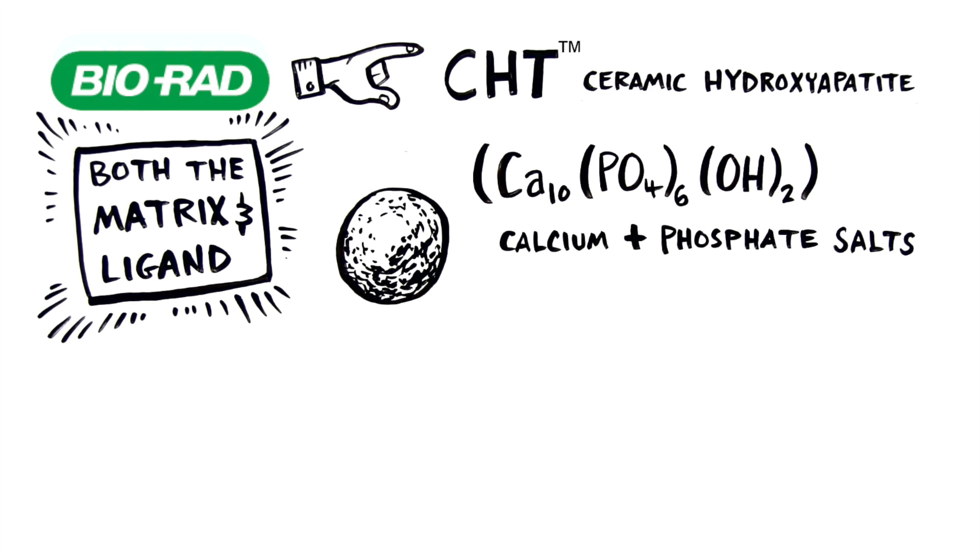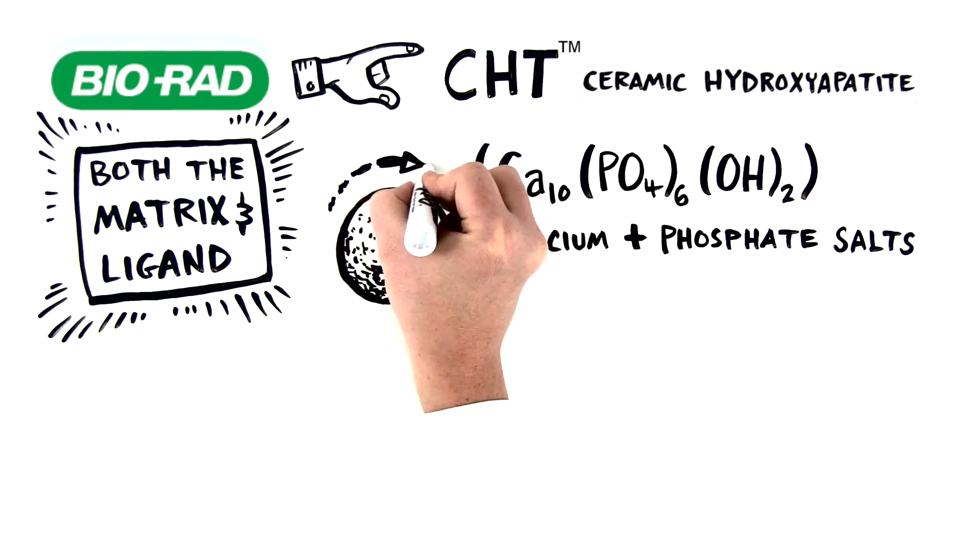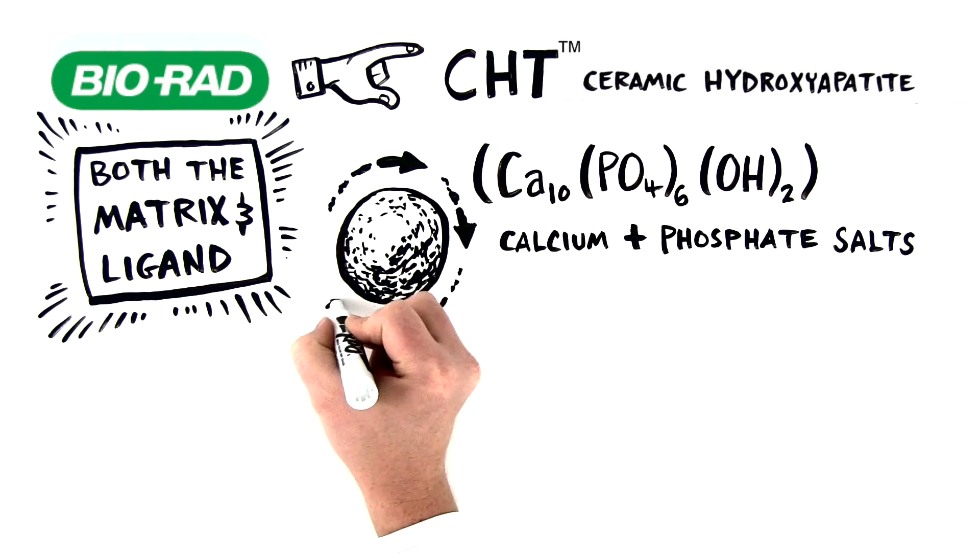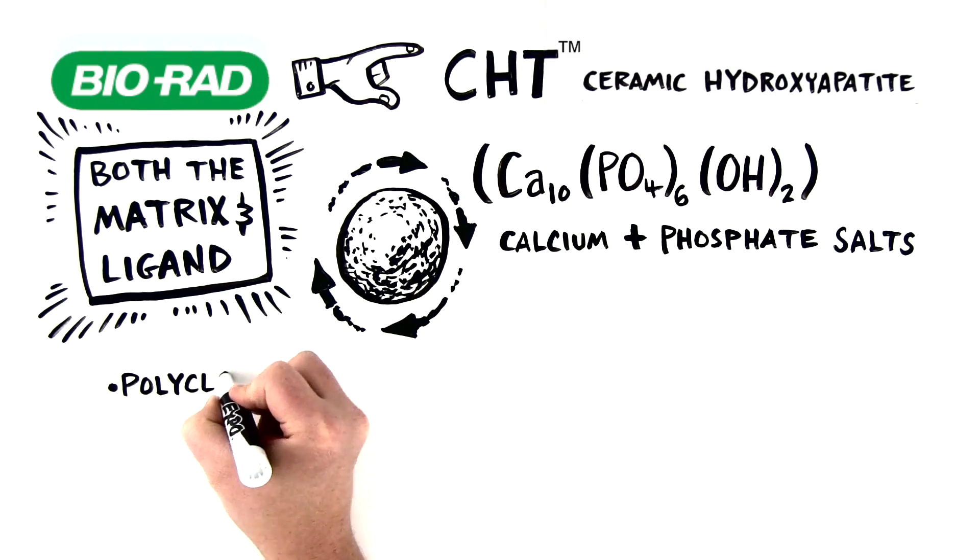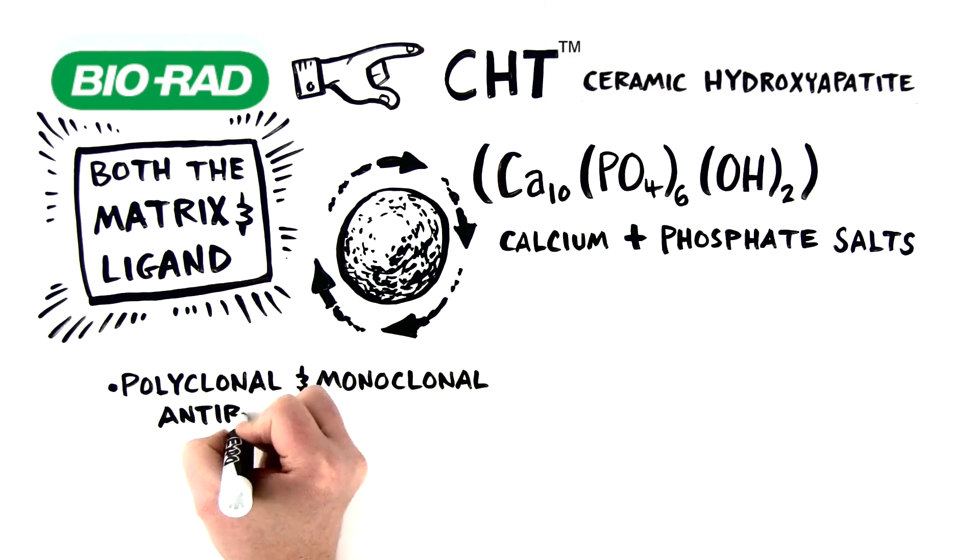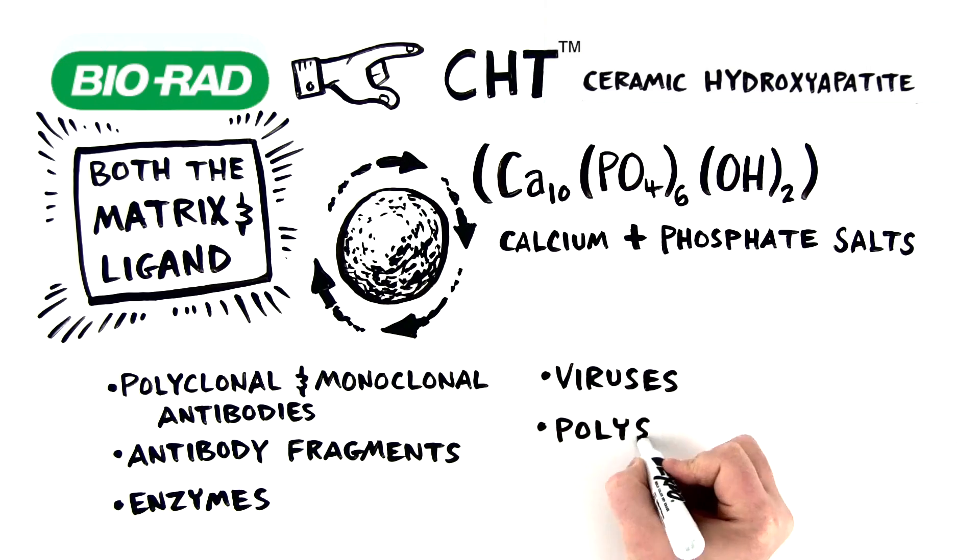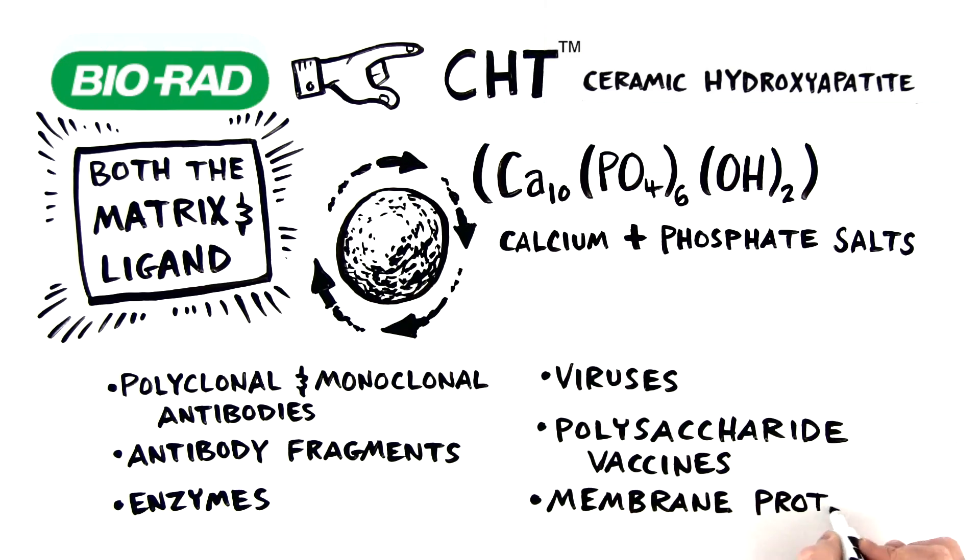CHT is a versatile chromatography support used for the separation of biological molecules. This includes everything from polyclonal and monoclonal antibodies to antibody fragments, enzymes, viruses, polysaccharide vaccines, and even membrane proteins.